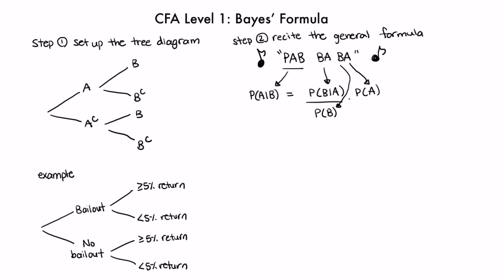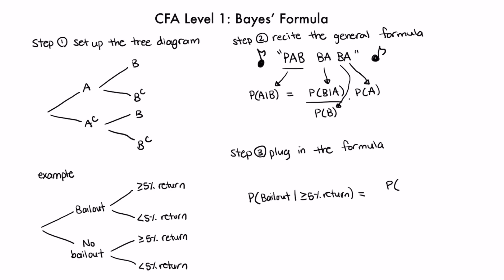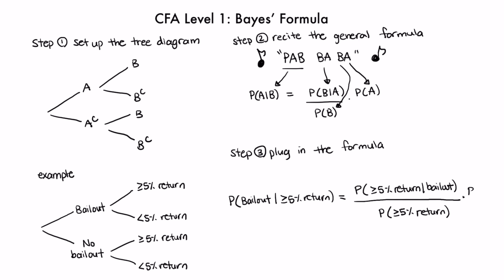Step three is to plug into the formula based on the tree diagram. The probability of A given B is the probability of a bailout given that you earn at least a 5% return, since the information we know is that you did earn more than 5%. That equals the probability of getting at least a 5% return given a bailout, divided by the probability of earning at least a 5% return, times the probability of a bailout.